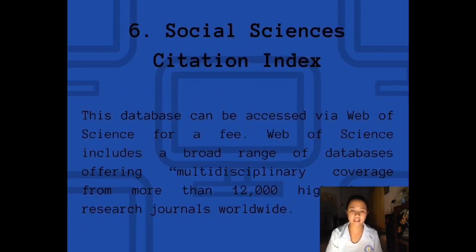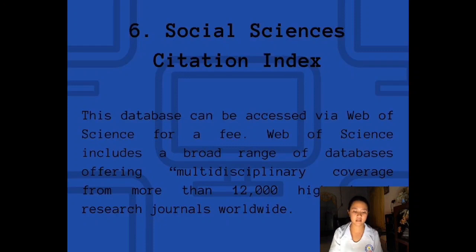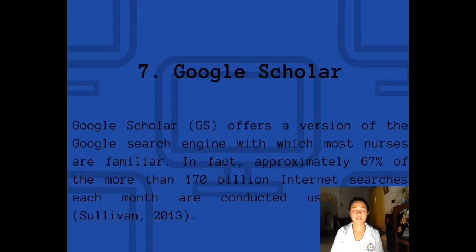The sixth is the Social Sciences Citation Index. This database can be accessed via Web of Science, which includes a broad range of databases offering multidisciplinary coverage from more than 12,000 high-impact research journals worldwide. Social Sciences Citation Index covers social sciences and disciplines. The last bibliographic retrieval system is Google Scholar, which offers a version of the Google search engine with which most nurses are familiar. Approximately 67% of the more than 170 billion internet searches each month are conducted using Google, according to Sullivan 2013. In Google Scholar, one can research topics such as the impact of the nursing practice environment on missed nursing care, and it also identifies barriers to evidence-based practice adoption.